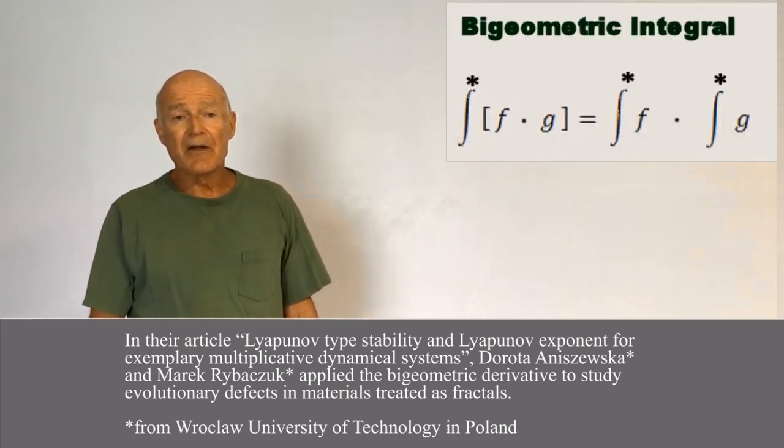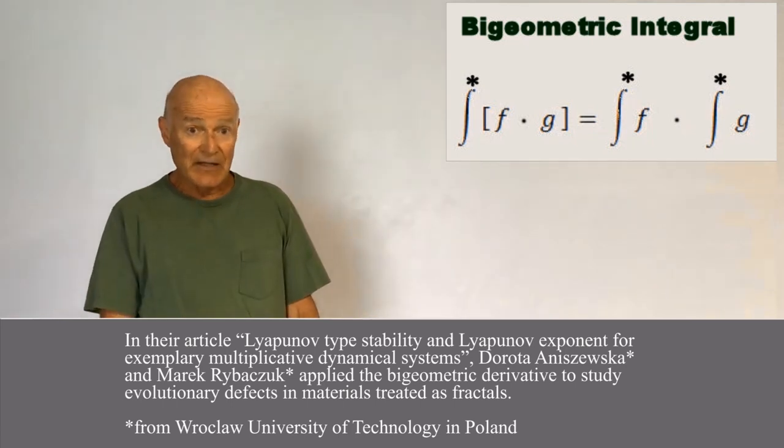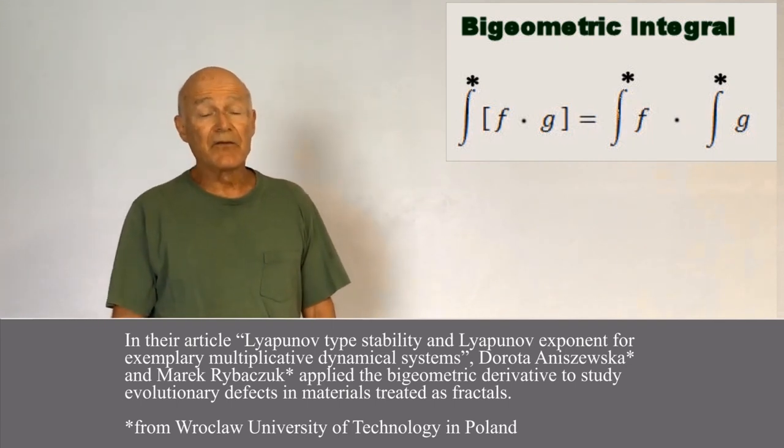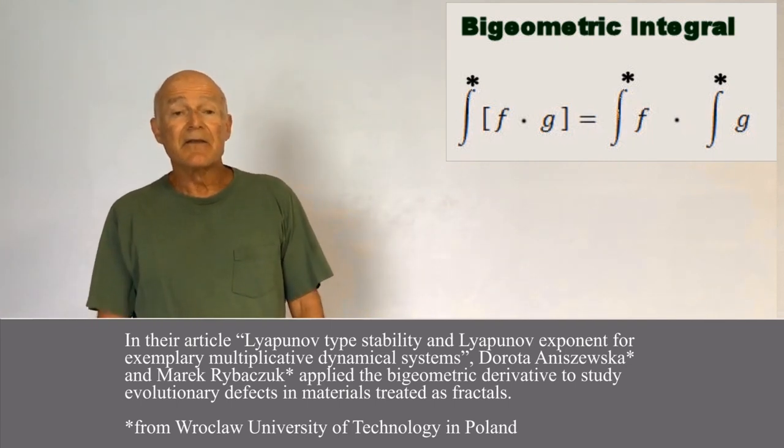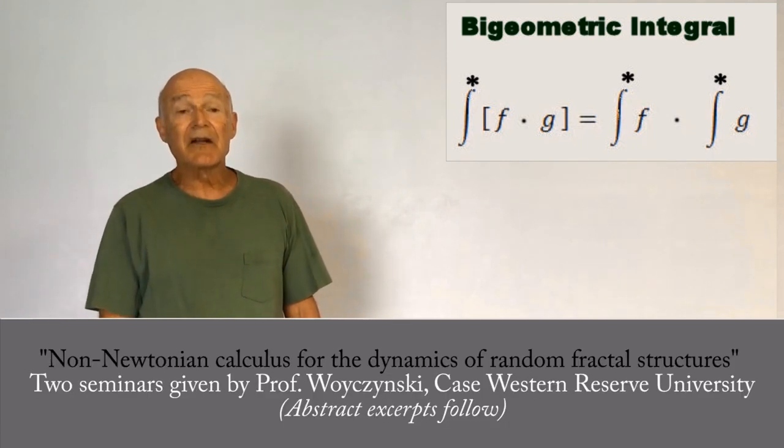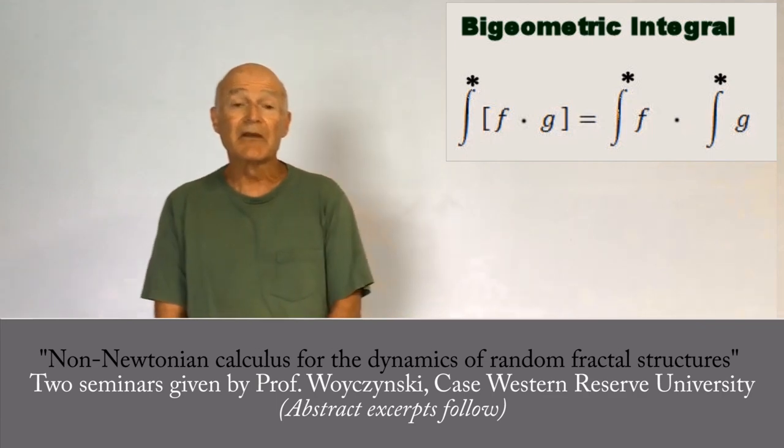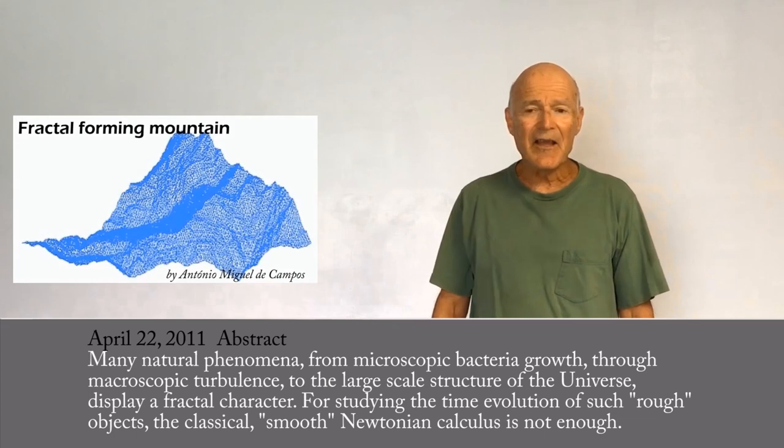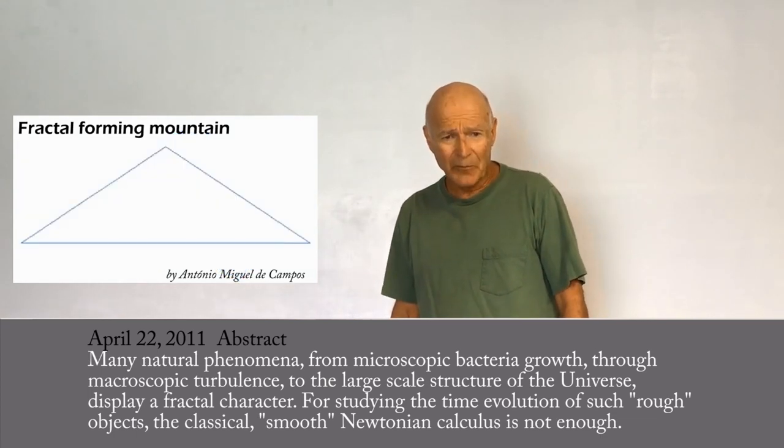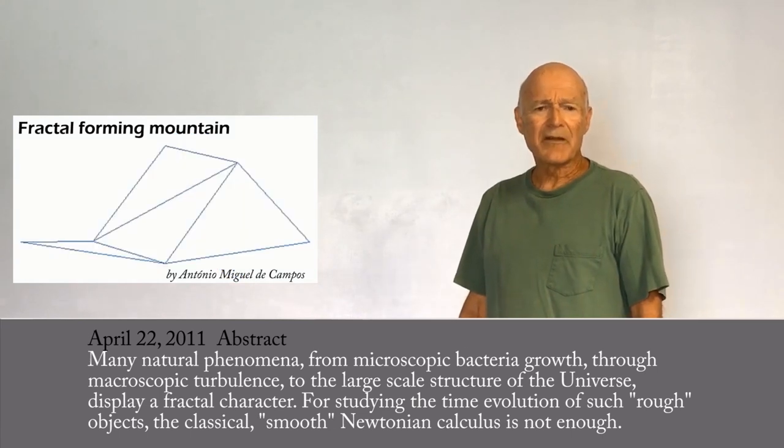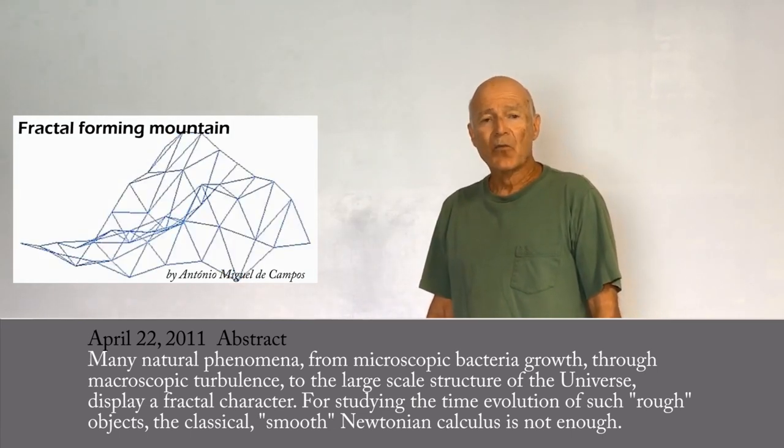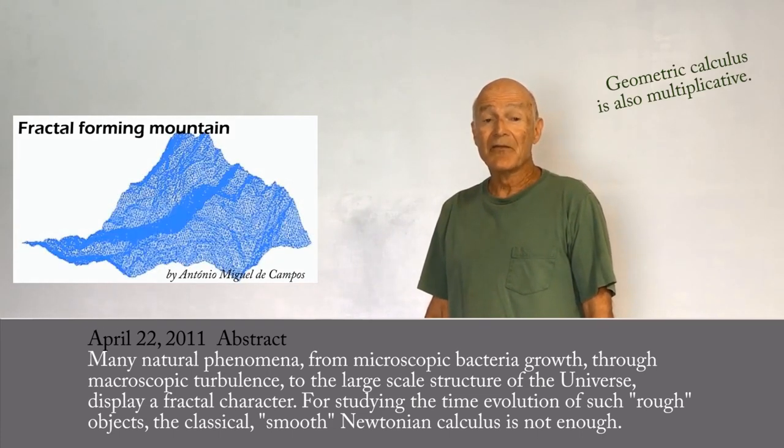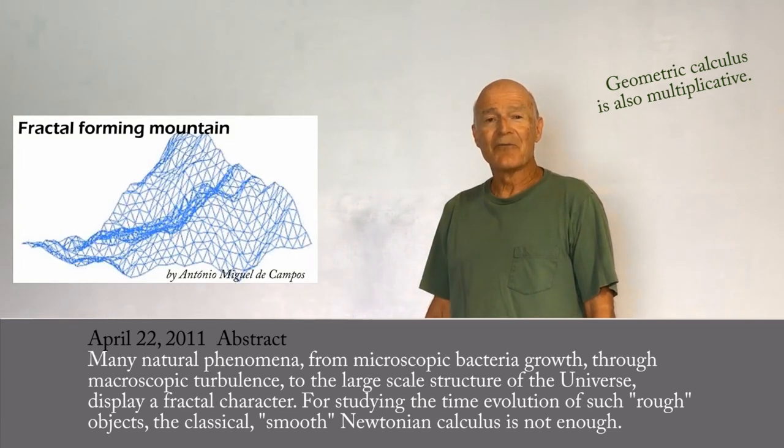Same way for the integral. The bi-geometric integral of a product of two functions is equal to the product of the two bi-geometric integrals. This is a feature that a lot of scientists and engineers have been using in the last few years. They find that the phenomenon they're studying in certain cases seems to behave more in a multiplicative way than in an additive way. So in that situation, you'd want to use the bi-geometric calculus.